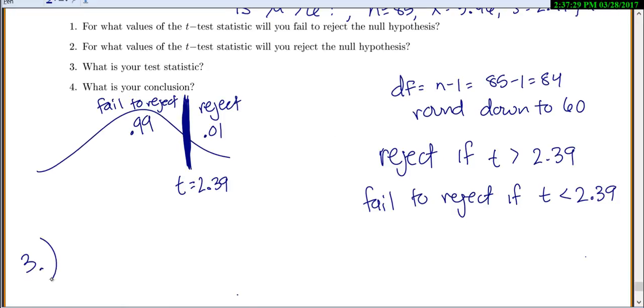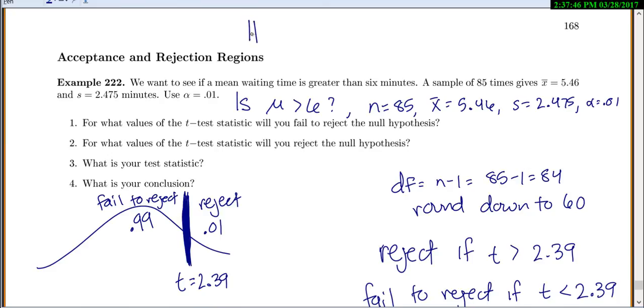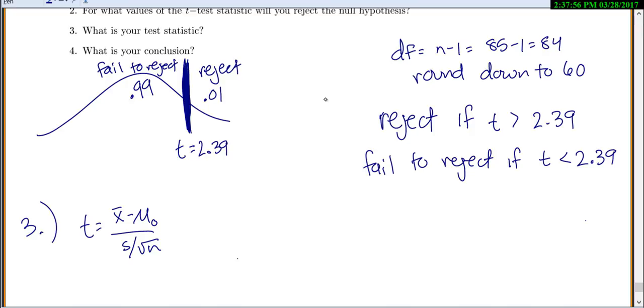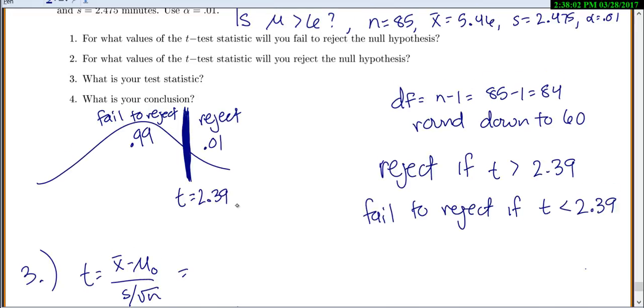Now for part 3, find your actual test statistic. So t is just equal to your sample mean minus hypothesized mean over s over the square root of n. Now realize at this point, we never actually wrote down our hypotheses. Never asked us for that. Let's come write it up here. So our alternative, we want to show that our mean is greater than 6. So the null will be that it's equal to 6. So x bar is 5.46. Our hypothesized mean, the mean in the null hypothesis is 6. s is 2.475. And n is 85. So this gives me negative 2.011.